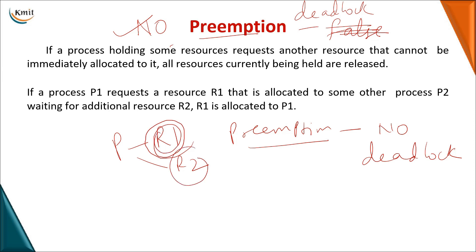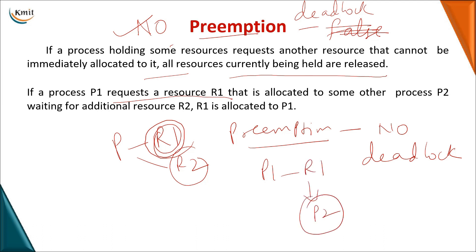In another case, if P1 requests resource R1 which is held by P2, and P2 is in a waiting state not doing any work, then R1 can be released from P2 and allocated to P1. If R1 is free, it can be directly allocated. In either case, resources are being taken away from some particular process — that is preemption.